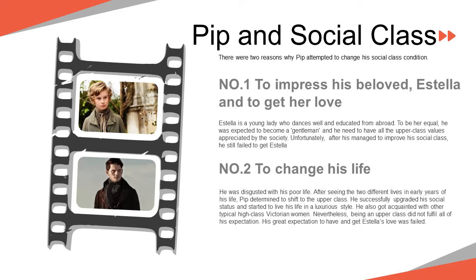Second, Pip wanted to change his life. He was disgusted with his poor life. After seeing two different ways of living in his early years, Pip determined to shift to the upper class. He became rich after a secret benefactor gave him money, and he acquired education and refined mannerisms. He successfully upgraded his social status and started to live a luxurious lifestyle. He also became acquainted with other typical high-class Victorian women. Nevertheless, being upper class did not fulfill all his expectations.